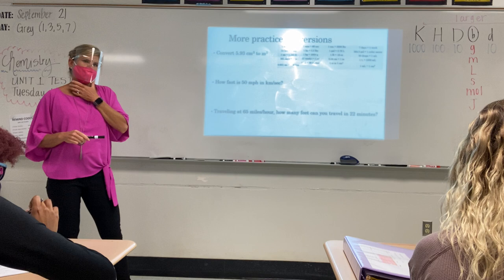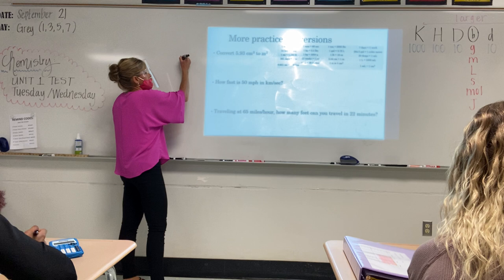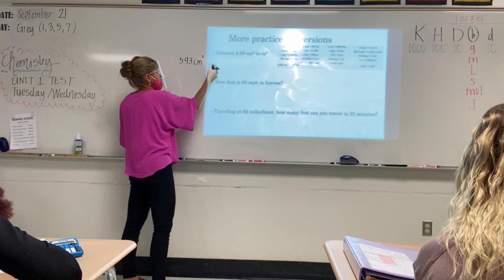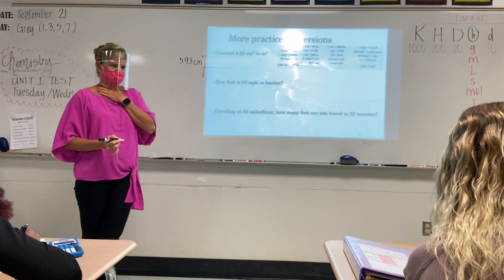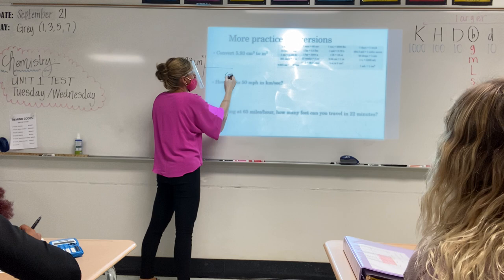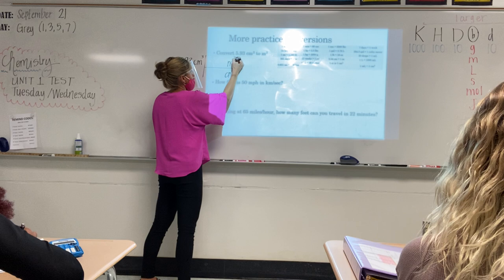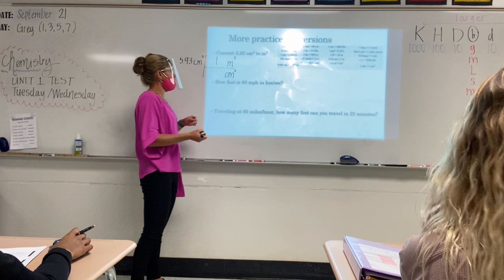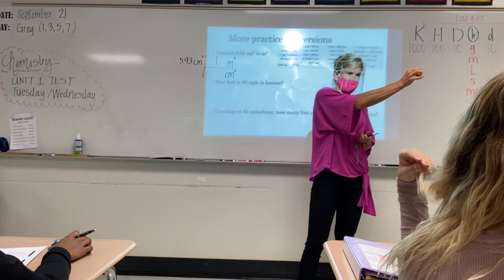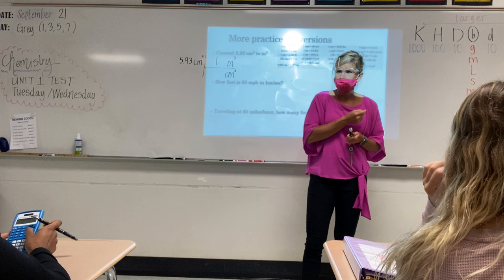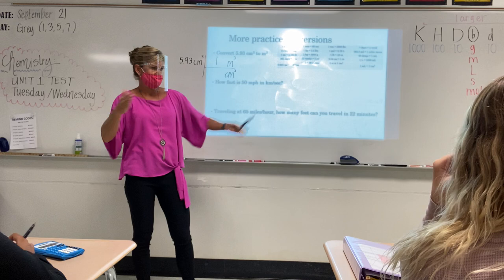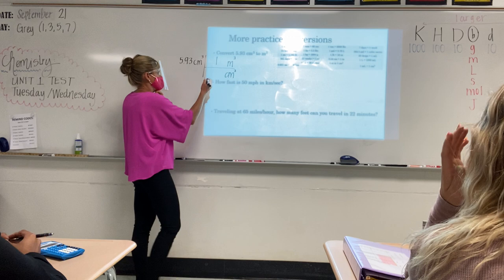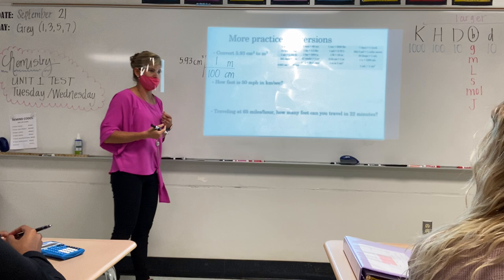Convert 5.93 centimeters cubed to meters cubed. We're going to write down our given: 5.93 centimeters cubed. Set up my conversion factor — centimeters cubed on the bottom, meters cubed on the top. What's bigger? Meter. Here's where I'm not quite sure what to do, right? I know centimeters to meters, but do I know centimeters cubed to meters cubed? No, we don't — because that's a cubic measurement, not just one dimension.